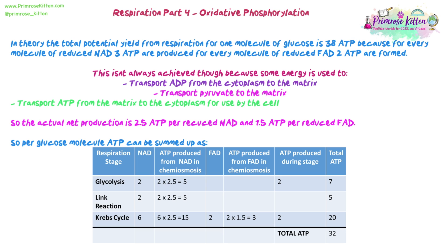So that's it — respiration in a nutshell. We've gone from glycolysis through to the link reaction, through to the Krebs cycle, and finally through to oxidative phosphorylation — which means adding a phosphate in the presence of oxygen. Now we're going to move on to looking at how energy transfers through larger systems like an ecosystem, a food chain, and some nutrient cycles.